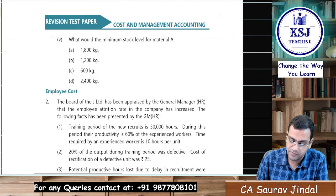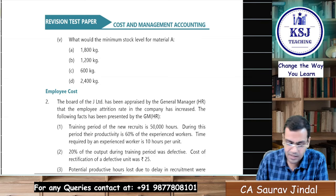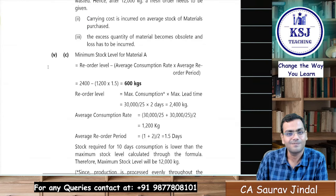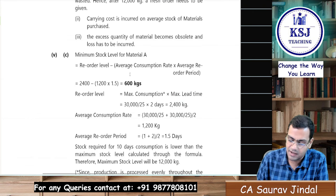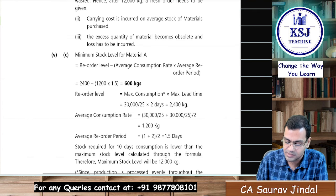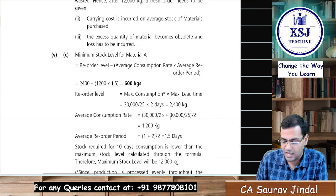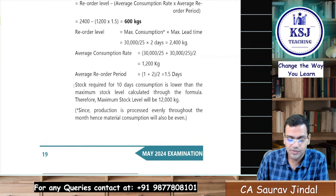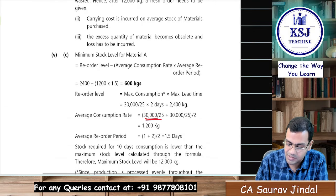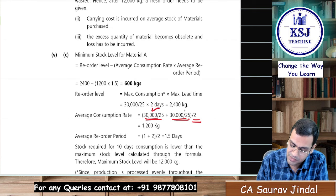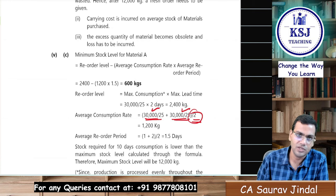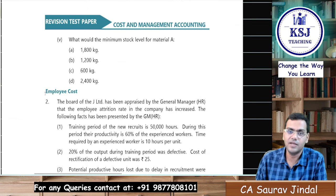The last sub-question — minimum stock level of A — is straightforward: reorder level minus (average consumption × average lead time). Average lead time is 1.5 days; average consumption is 1,200 kg per day (same as max/min since production is even). So minimum stock level = 2,400 − (1,200 × 1.5) = 600 kg. This is a very good and comprehensive question on material costing.